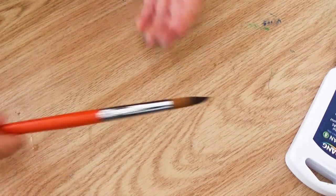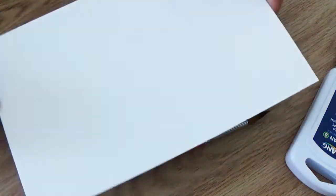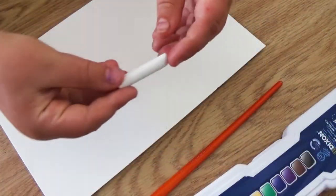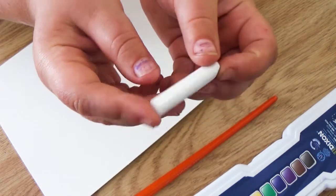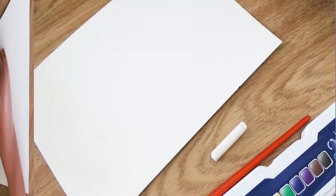The other supplies you'll find in the art kit are a paint brush, some paper, and a white crayon. What? A white crayon? Today we're gonna be doing some watercolor magic and it starts with a white crayon.